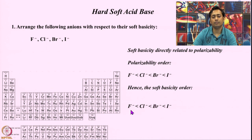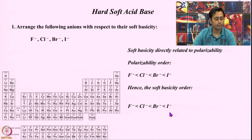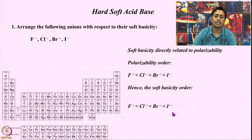Fluoride is the least soft — or we can say the hardest base in this series — where iodide is the softest base. So looking at soft nature: fluoride to chloride to bromide to iodide, soft nature increases from fluoride to iodide, and hard nature increases as we move from iodide to fluoride.